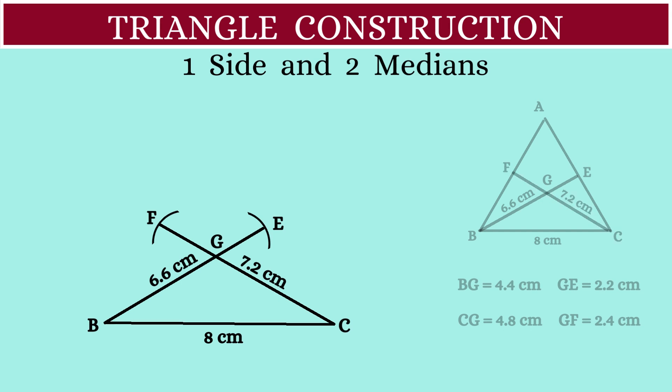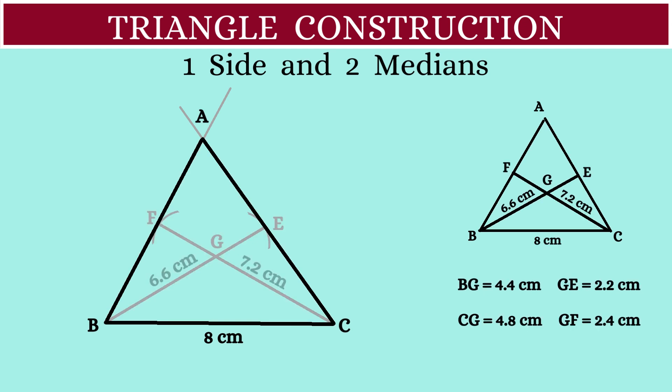Now, let's join BF and CE and then produce them to meet at point A. The triangle thus formed ABC is the required triangle.